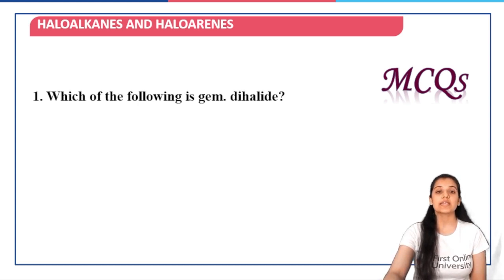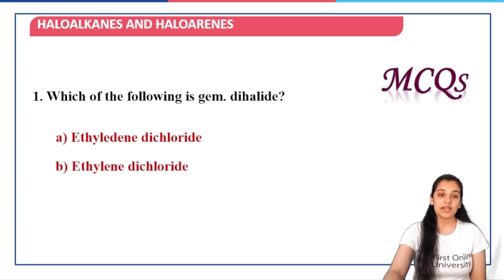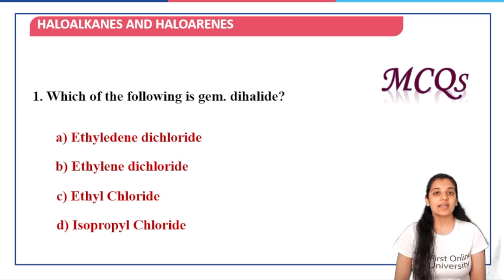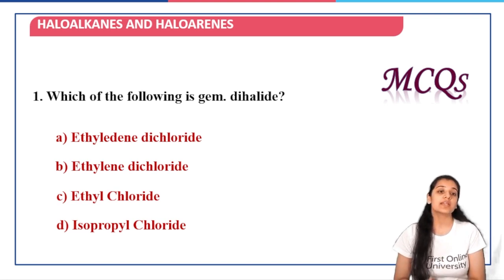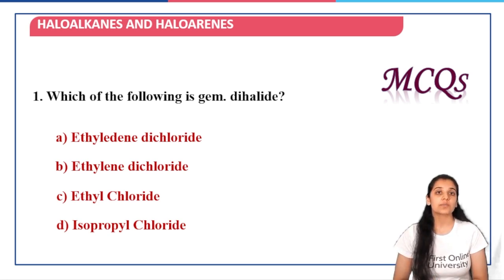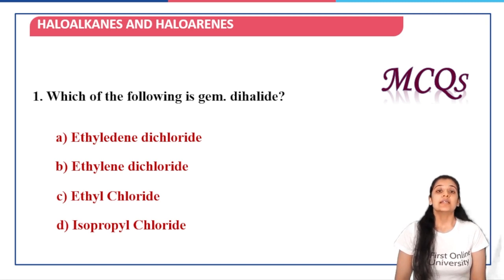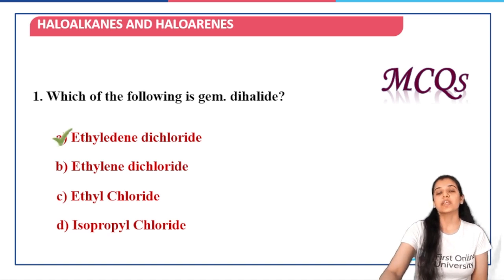The first concept check question is: which of the following is a geminal dihalide? The options are ethylene dichloride, ethylidene dichloride, ethyl chloride, and isopropyl chloride. Options C and D are monohalogen compounds and go out of the picture. Since ethylidene dichloride is 1,1-dichloroethane — where the two halogen atoms are attached to the same carbon atom — option A is the correct answer for geminal dihalide.